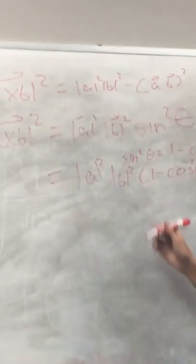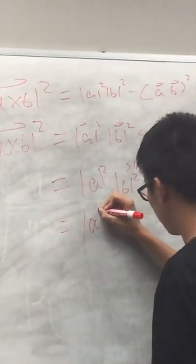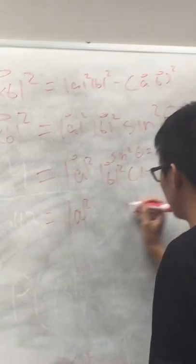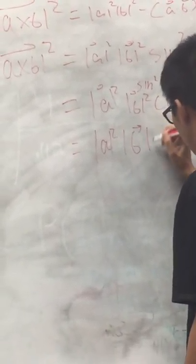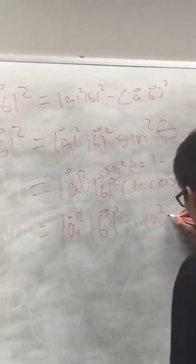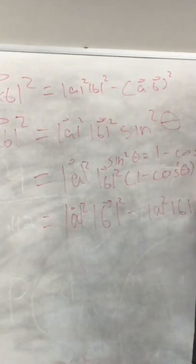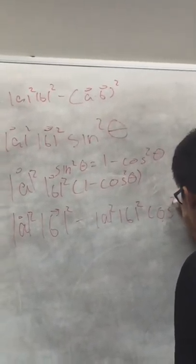times one minus cosine squared theta. So when we distribute this, we should end up with magnitude of a squared, I need to draw a fat line again, times b squared, and then we multiply into that minus magnitude of a squared times the magnitude of b squared times cosine squared theta.